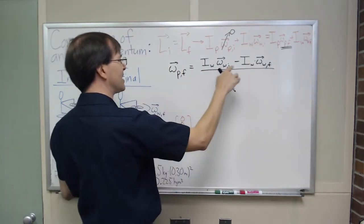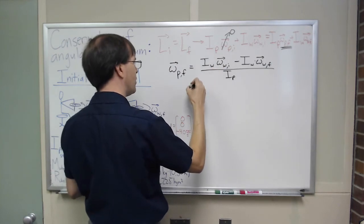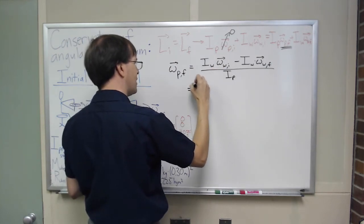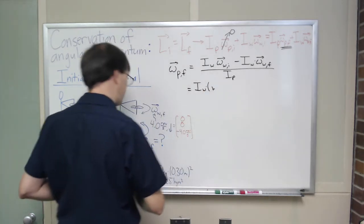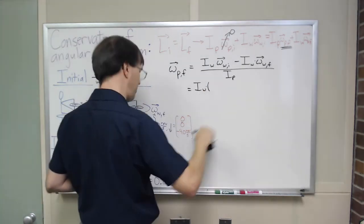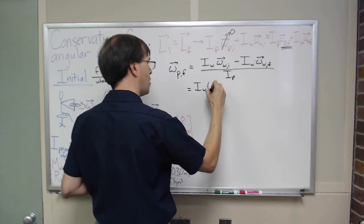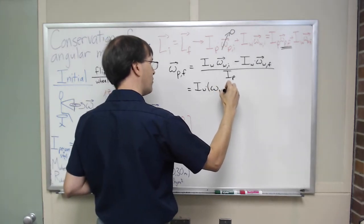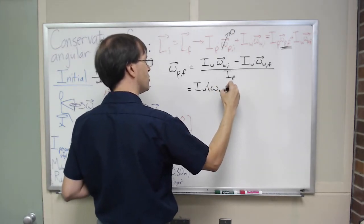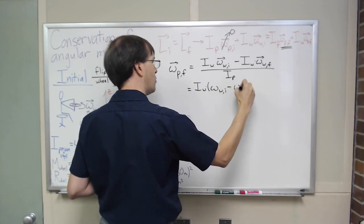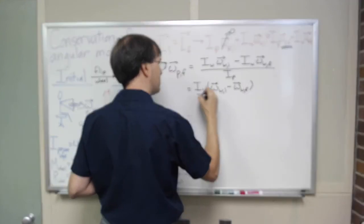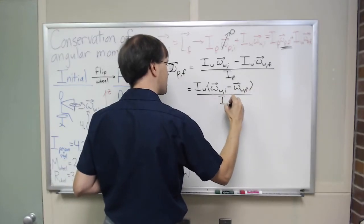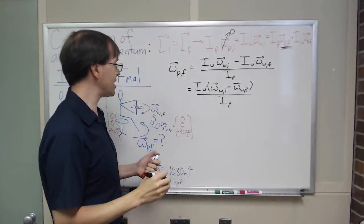And I could even factor out that I wheel from the top, I've got I wheel times, oh, that's a w, this is an omega. Too many w's and omega's around, times omega wheel initial minus omega wheel final, these are vectors, divided by I person, and at this point I can plug things in.